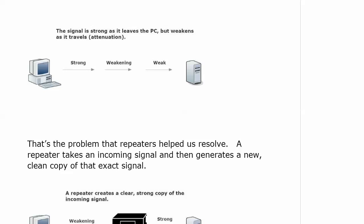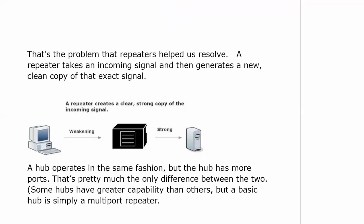The signal could be very weak and practically unusable when it gets to the destination. That's the problem that repeaters helped us resolve, because a repeater takes an incoming signal and then generates a new clean copy of that exact signal. That's all a repeater does. A hub really operates in the same fashion, but the hub has more ports — that's really the only major difference between the two. A hub is a multi-port repeater.